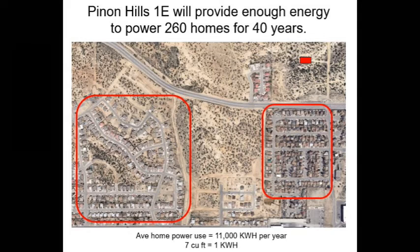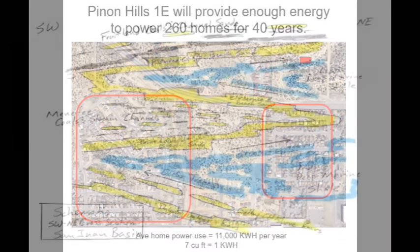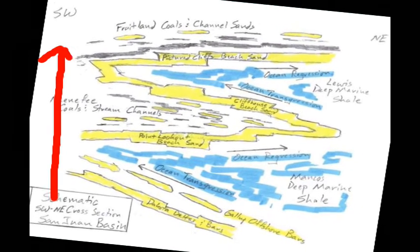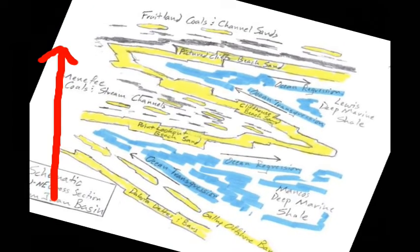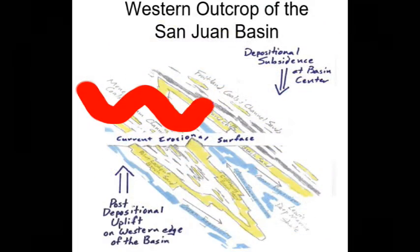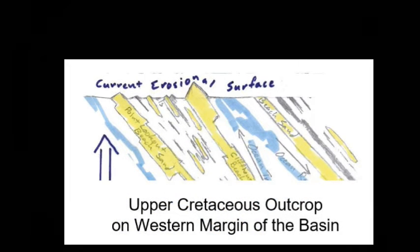And that, boys and girls, is what this is all about. In closing, I'd like to tie the subsurface formations in with some of the topography we see here at the surface in the Four Corners. After the sediments were deposited in the basin, there was tectonic movement that raised up the western edge of the basin. The uplifted areas were eroded down to the current surface level, exposing the formations as one drives from Farmington to Shiprock.